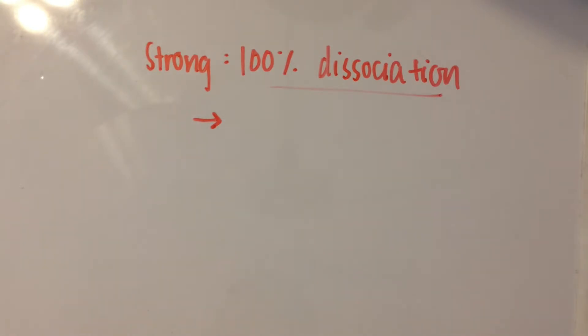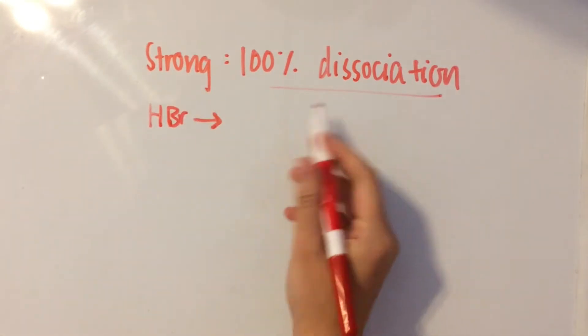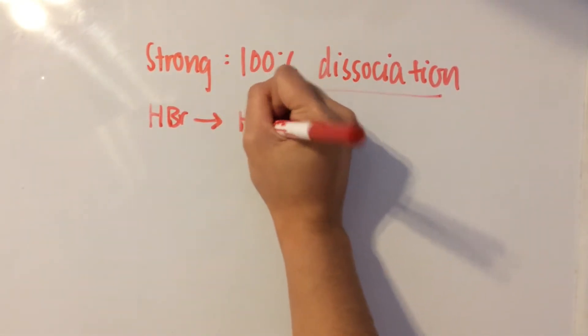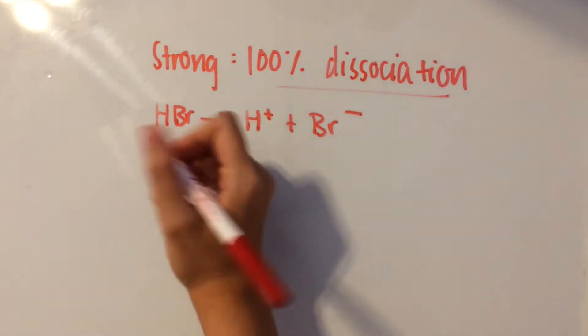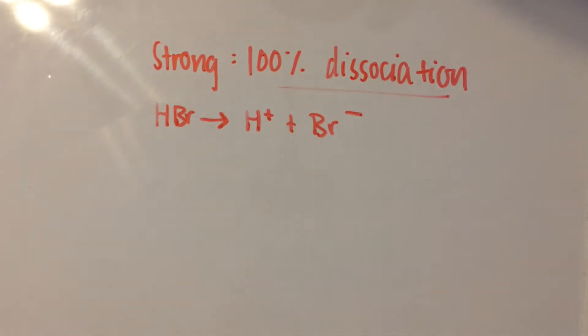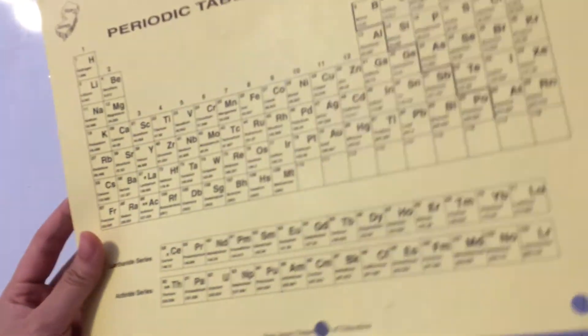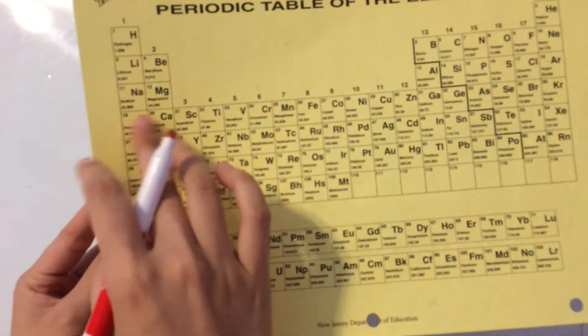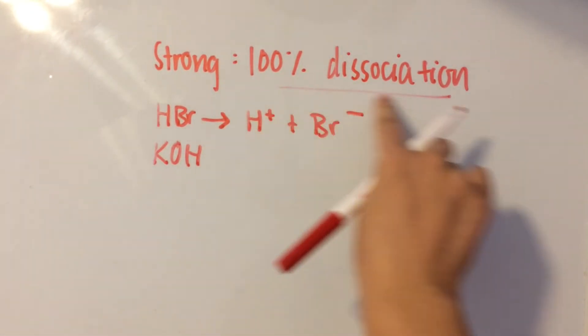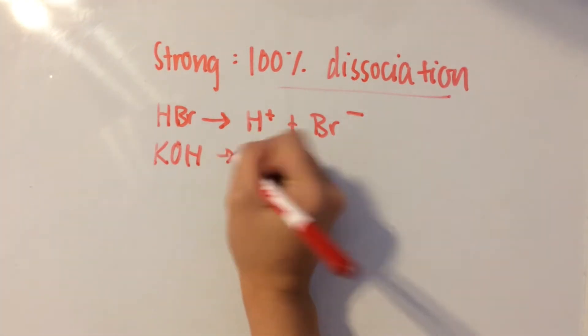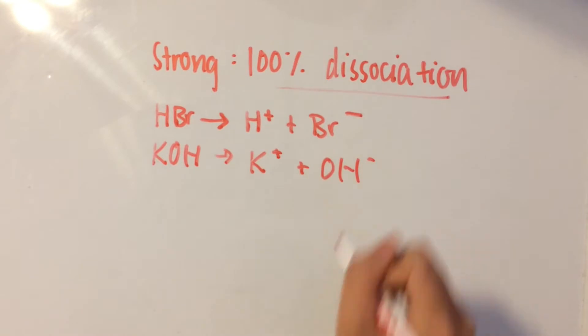An example of a strong acid would be HBr because it completely dissociates into H plus and Br minus. A strong base would be anything from groups one and two of the periodic table. So KOH goes through a hundred percent dissociation into K plus ions and OH minus ions.